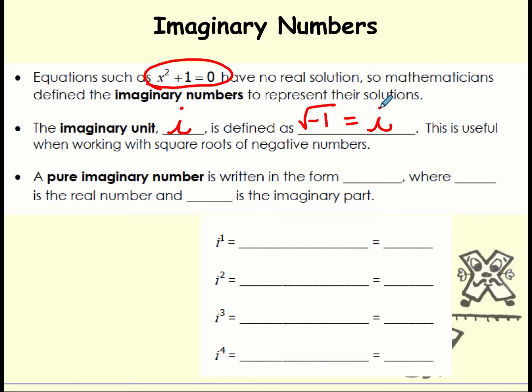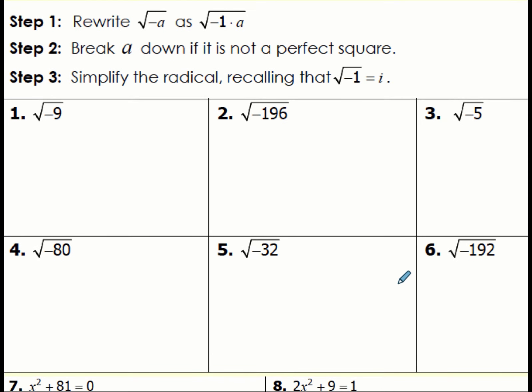A pure imaginary number is always written in the form a plus bi, where a is a real number and bi is the imaginary part. You have to be able to simplify radicals with square roots that have negatives underneath them.